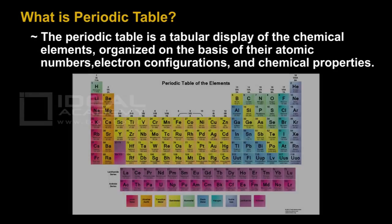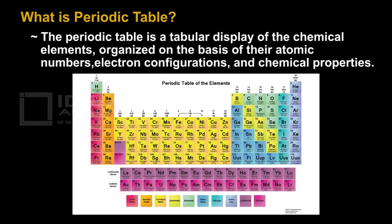First of all, we will start with periodic table. What is a periodic table? Periodic table is nothing but a tabular display of chemical elements and they are organized based on their atomic numbers, electron configuration, and chemical properties.